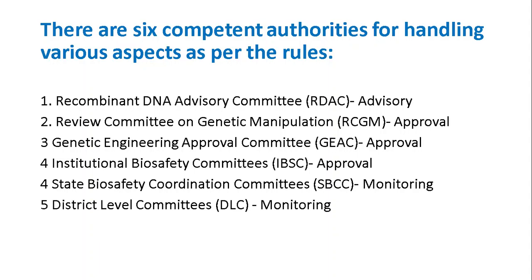The six committees are: the Recombinant DNA Advisory Committee (RDAC), which is an advisory committee; the Review Committee on Genetic Manipulation (RCGM), which is an approval committee; the Genetic Engineering Approval Committee (GEAC), also an approval committee; the Institutional Biosafety Committee (IBSC), an approval committee; the State Biosafety Coordination Committee, a monitoring committee at the state level; and the District Level Committee, which monitors ongoing research.